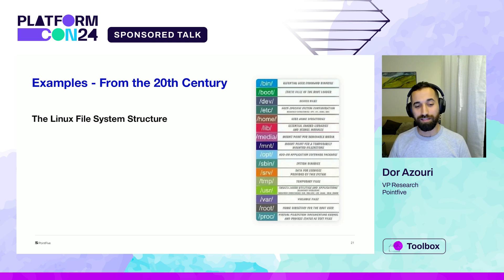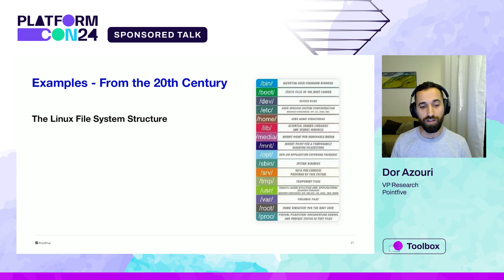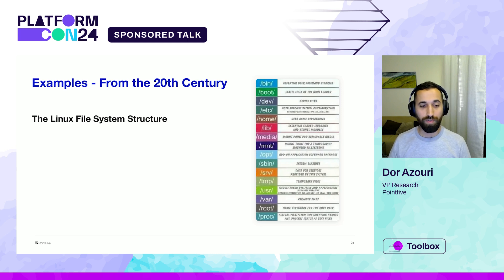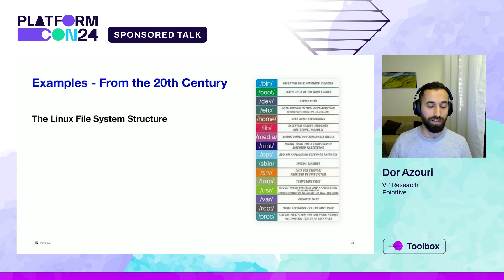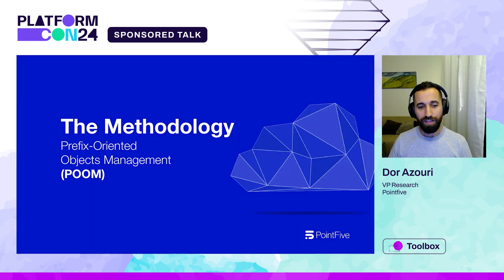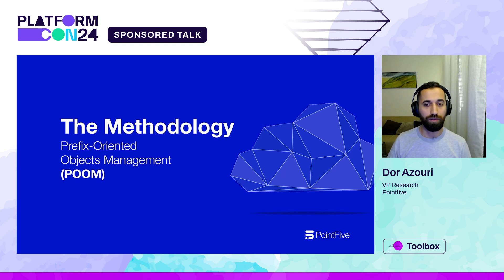Another hint from the past is the Linux file system structure, organized so that each path or directory holds a different kind of usage and files. For example, the sbin directory holds system binaries — not very large files, just the executables you run for your commands. Now let us introduce the methodology: the Prefix-Oriented Object Management, or in short, POOM.